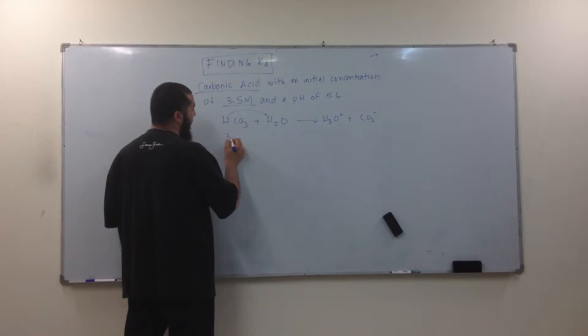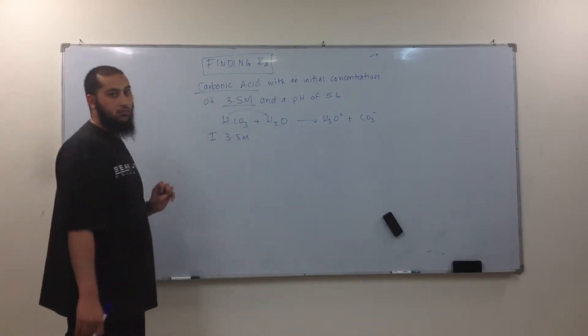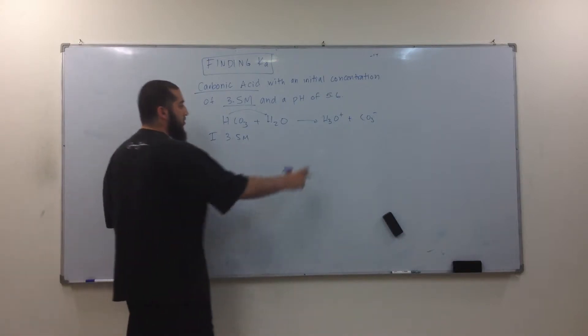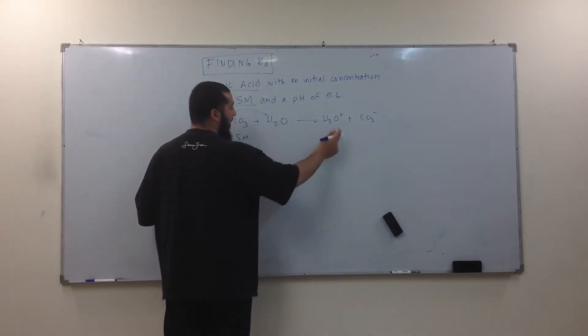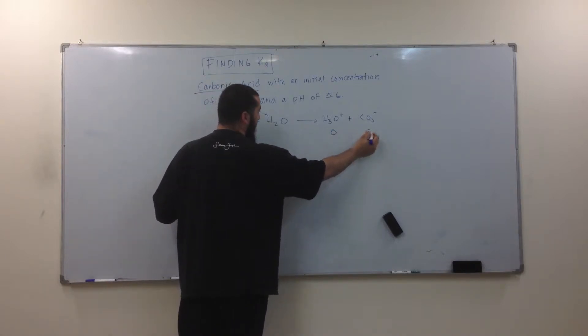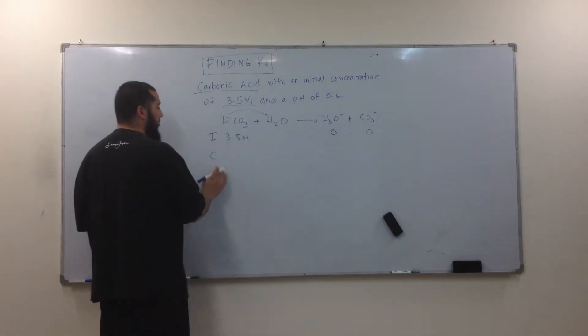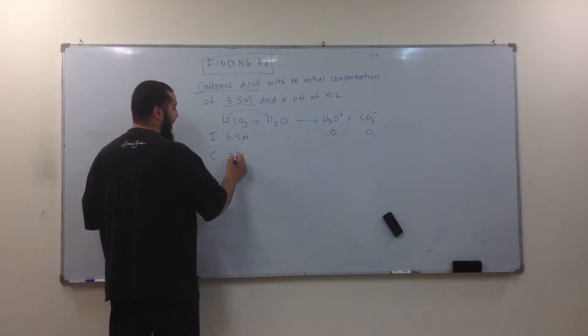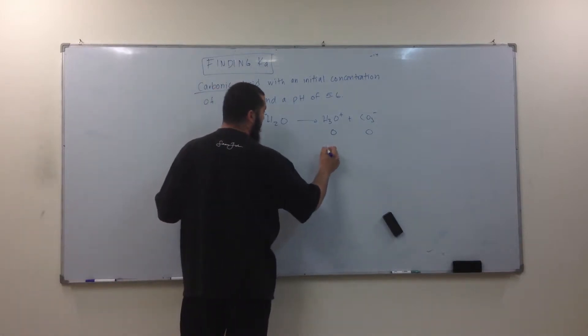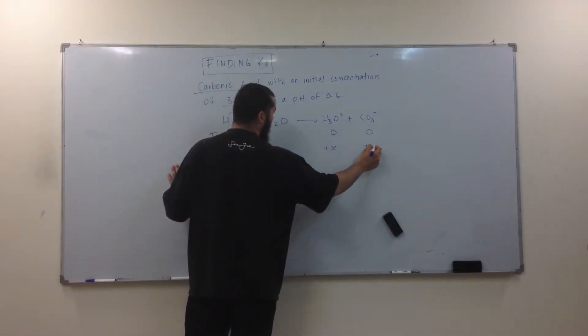So my initial concentration was 3.5 molar. This is my initial. What was the initial concentration of this? We don't care about this, right? What was the initial concentration of this? Zero. Zero. Initial concentration? Zero. Zero. And so what's my change? Minus X. Minus X. What's my change? Plus X. What's my change? Plus X. Plus X.